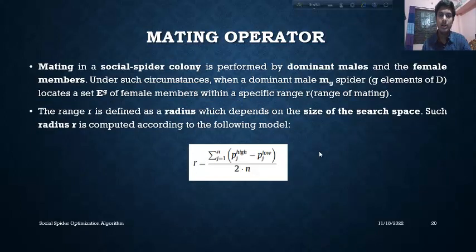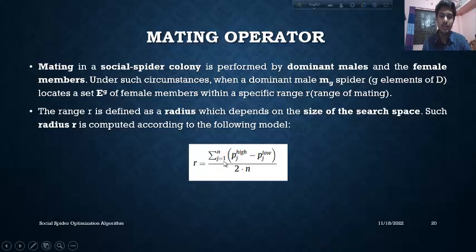Now the mating operator. Mating in a social spider colony is performed by the dominant males and only the female members. We consider a radius for the size of the search space which depends on the search space dimensions. The radius is calculated by iterating j from 1 to N, taking the higher bound minus lower bound, divided by 2 times N, the number of members.